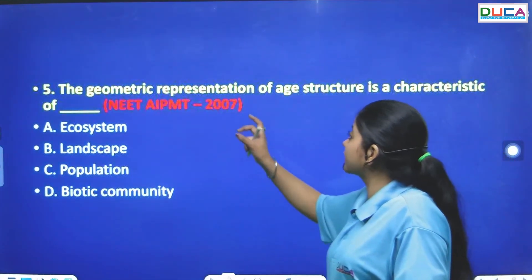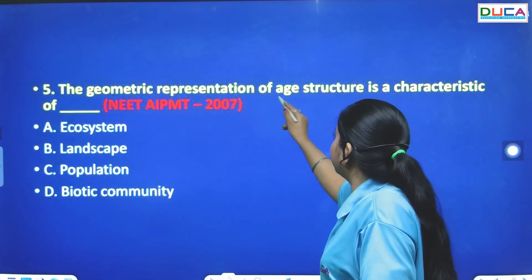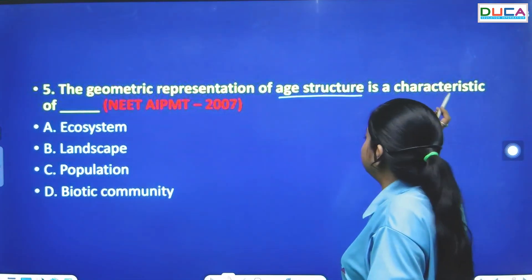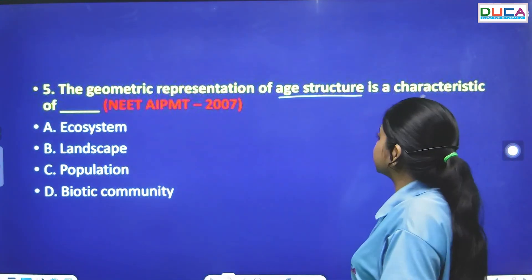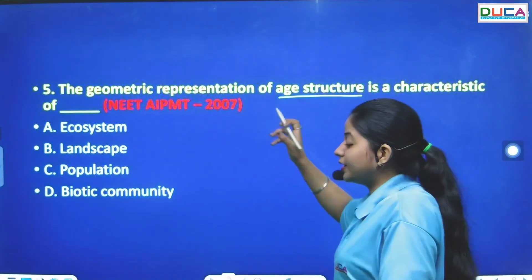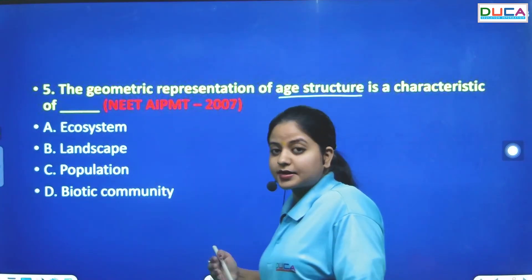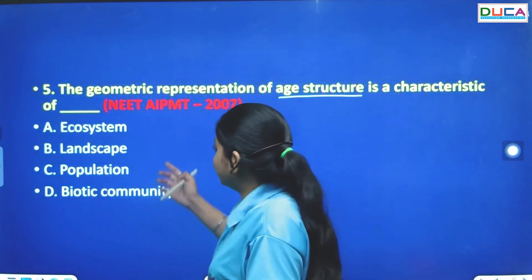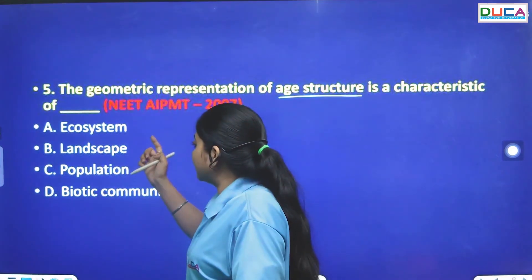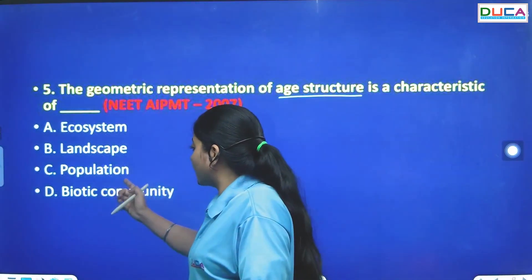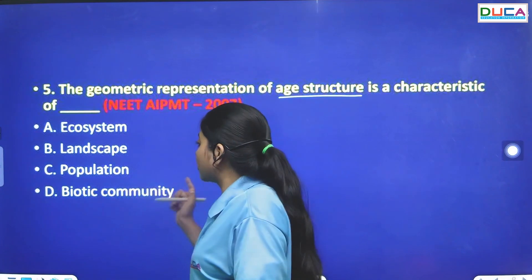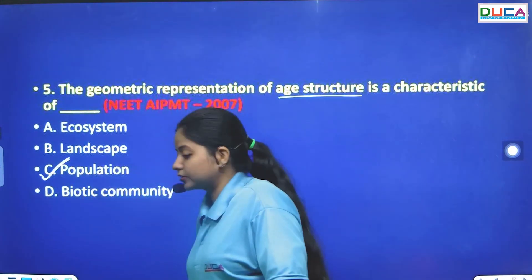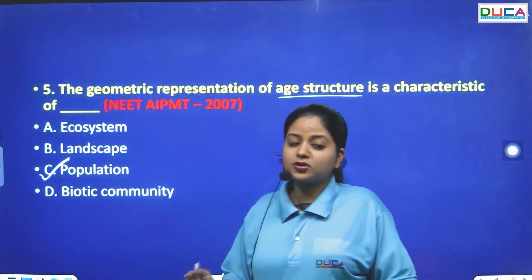The next question: Geometric representation of age structure is a characteristic of population — not ecosystem, landscape, or biotic community. The answer is population.